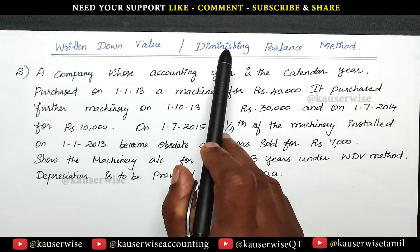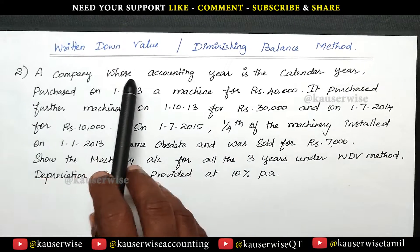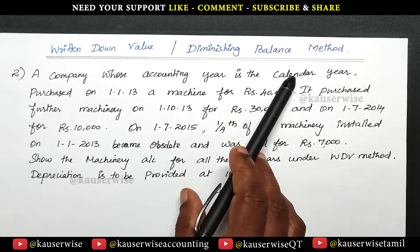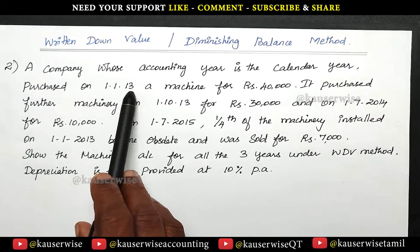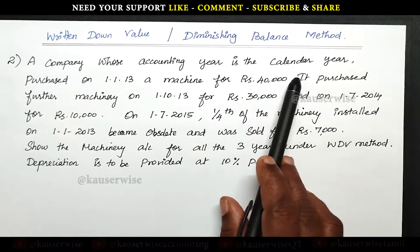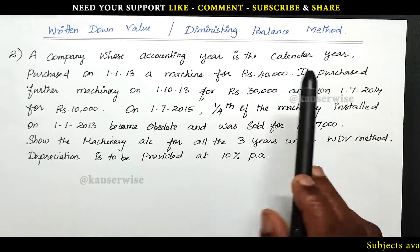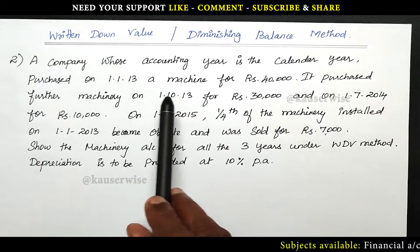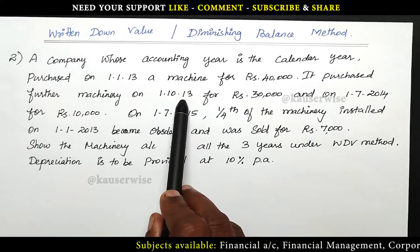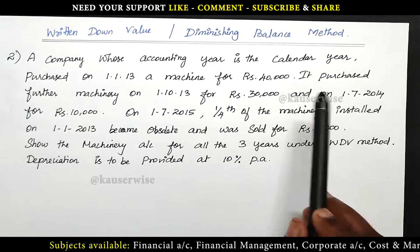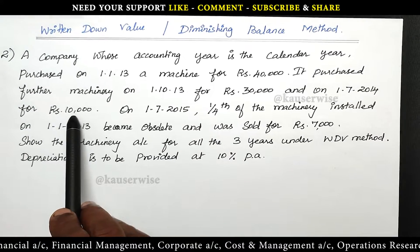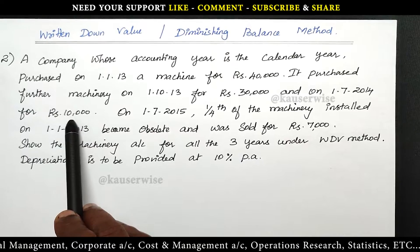Written down value or diminishing balance method. A company whose accounting year is the calendar year — that means January to December — purchased on 1-1-2013 a machine for Rs. 40,000. They purchased further machinery on 1-10-2013, in the same year, for Rs. 30,000. And on 1st July 2014, that is the next year, for Rs. 10,000.